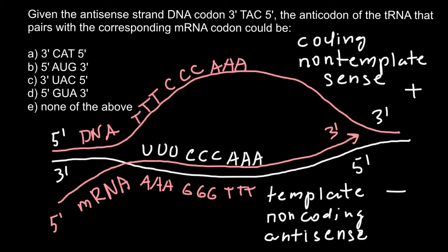Now let's return to our question. We are told that given the antisense strand of the DNA, the codon runs in the 3' to 5' direction, and the sequence is TAC. So let's put that sequence here. The antisense strand gives us TAC in the 3' to 5' direction. The corresponding mRNA codon would therefore be adenine, uracil, guanine — AUG — and this mRNA codon runs 5' to 3'.